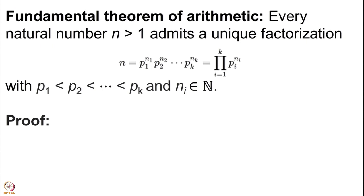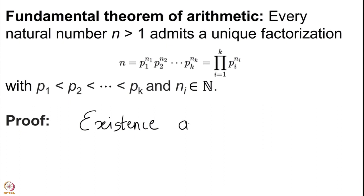There are two parts that we need to prove. We need to prove existence and uniqueness. We need to prove that such a factorization exists for every natural number n, and once we have proven the existence, we will need to prove that the factorization is unique. Let us start — we will use the method of induction quite liberally.